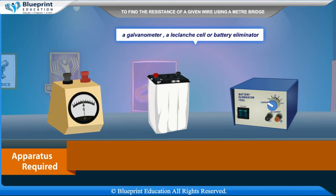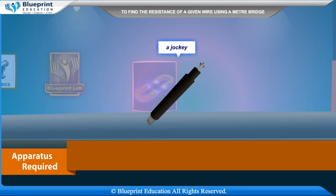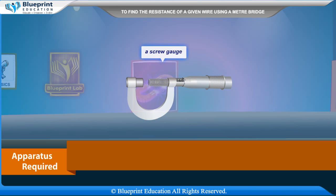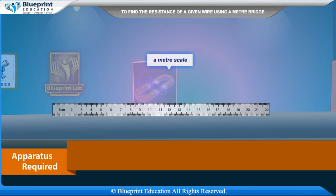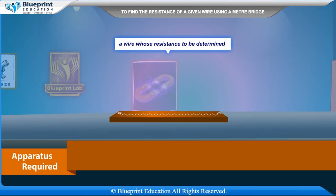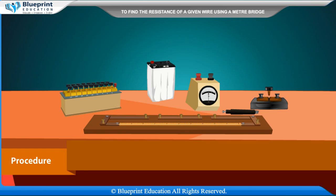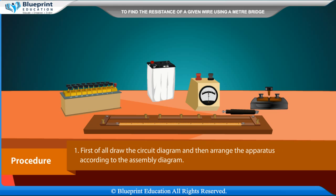Apparatus also includes a Leclanche cell or battery eliminator, a jockey, a one-way key, a screw gauge, a meter scale, a wire whose resistance is to be determined, and connecting wires.